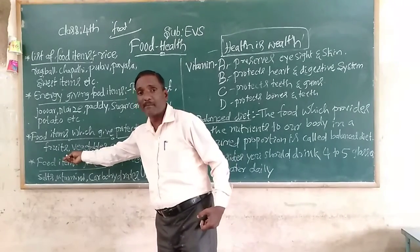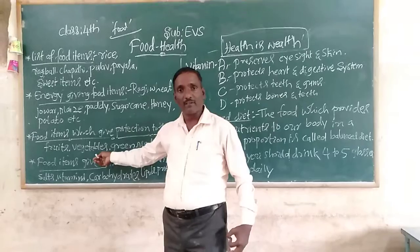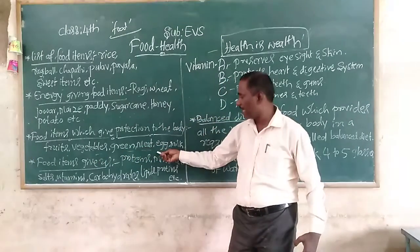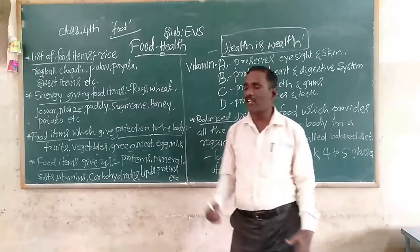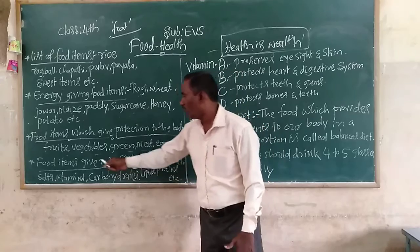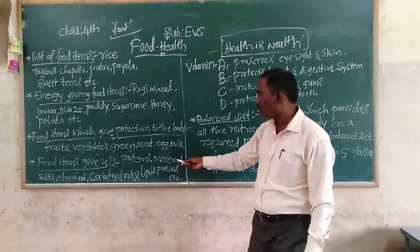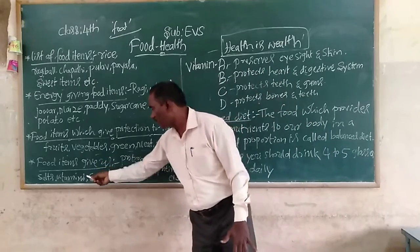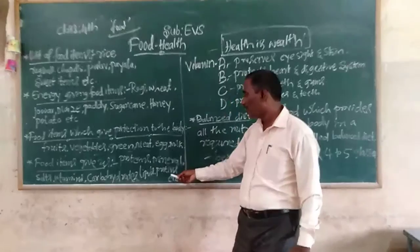Different types of fruits, different types of vegetables — green leafy vegetables, meat, milk, etc. These are the protective food items. And next, food items contain these nutrients: proteins, minerals, salts, vitamins, carbohydrates, lipids, proteins.